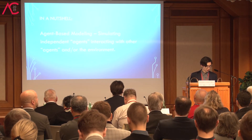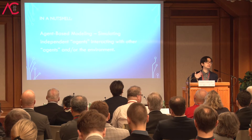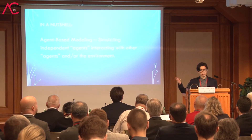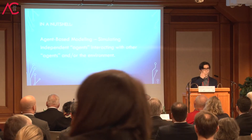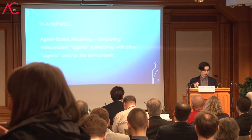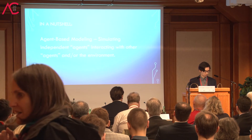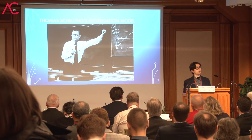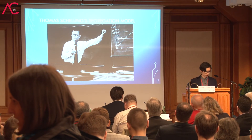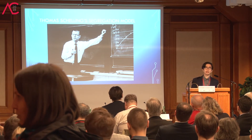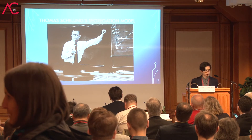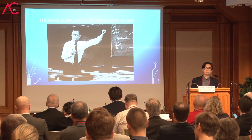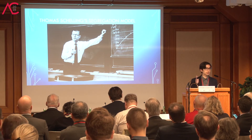Agents can be anything at all — atoms, molecules, plants, animals in the natural sciences — but of course we're primarily concerned with agents as individual human beings. The most famous agent-based model, one you'll encounter in practically every introduction to agent-based modeling, is by Thomas Schelling, called the segregation model.